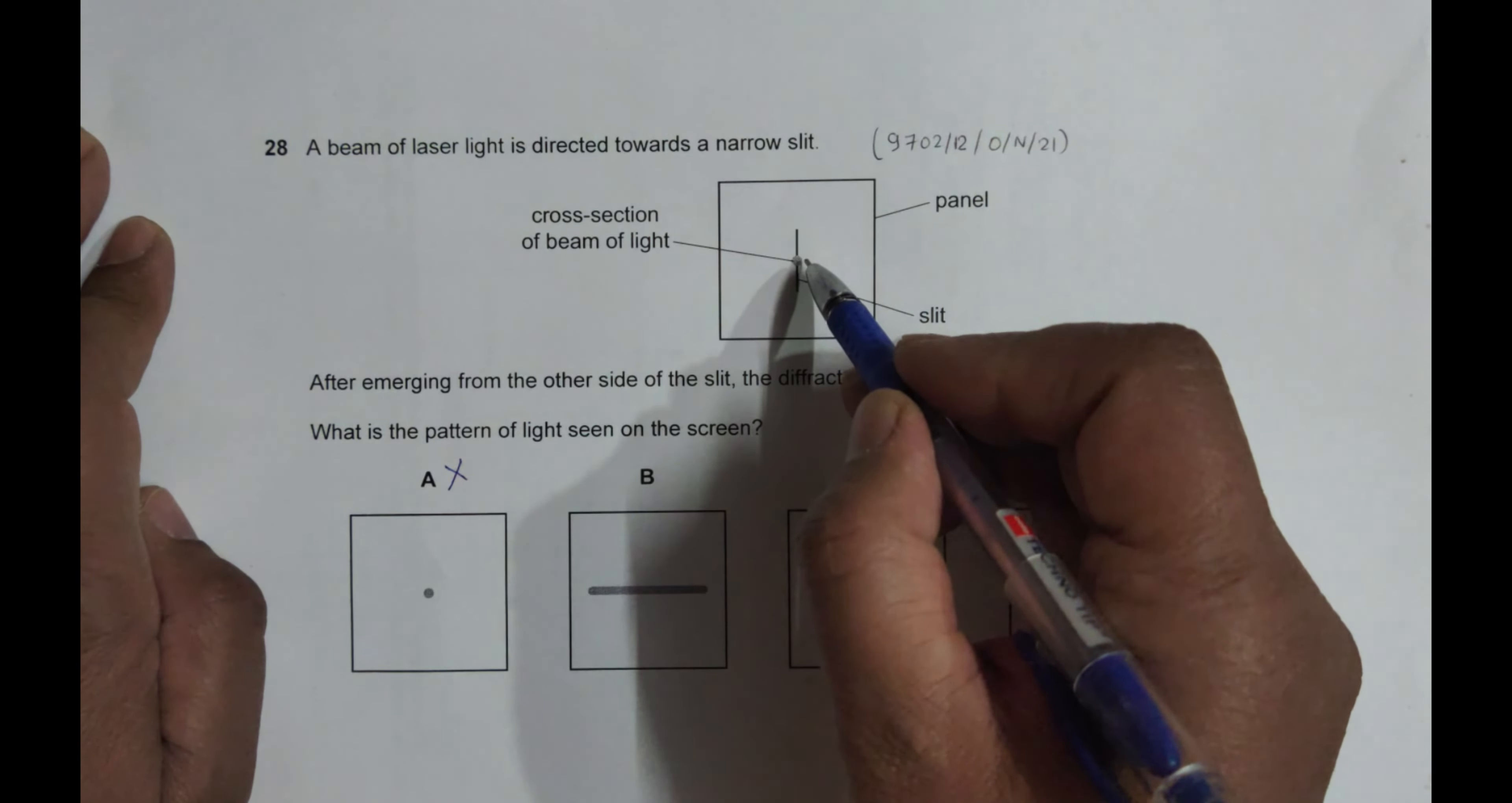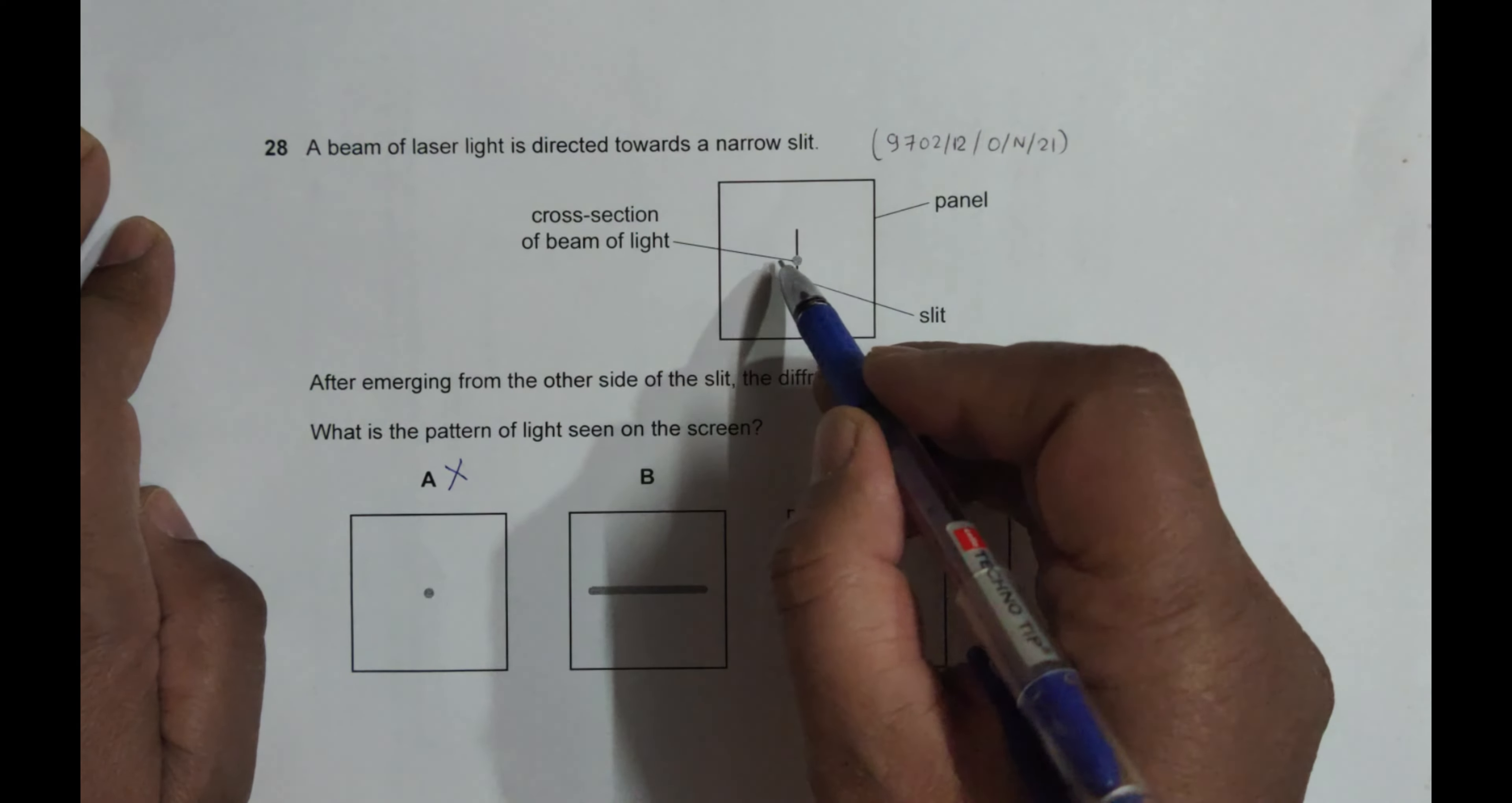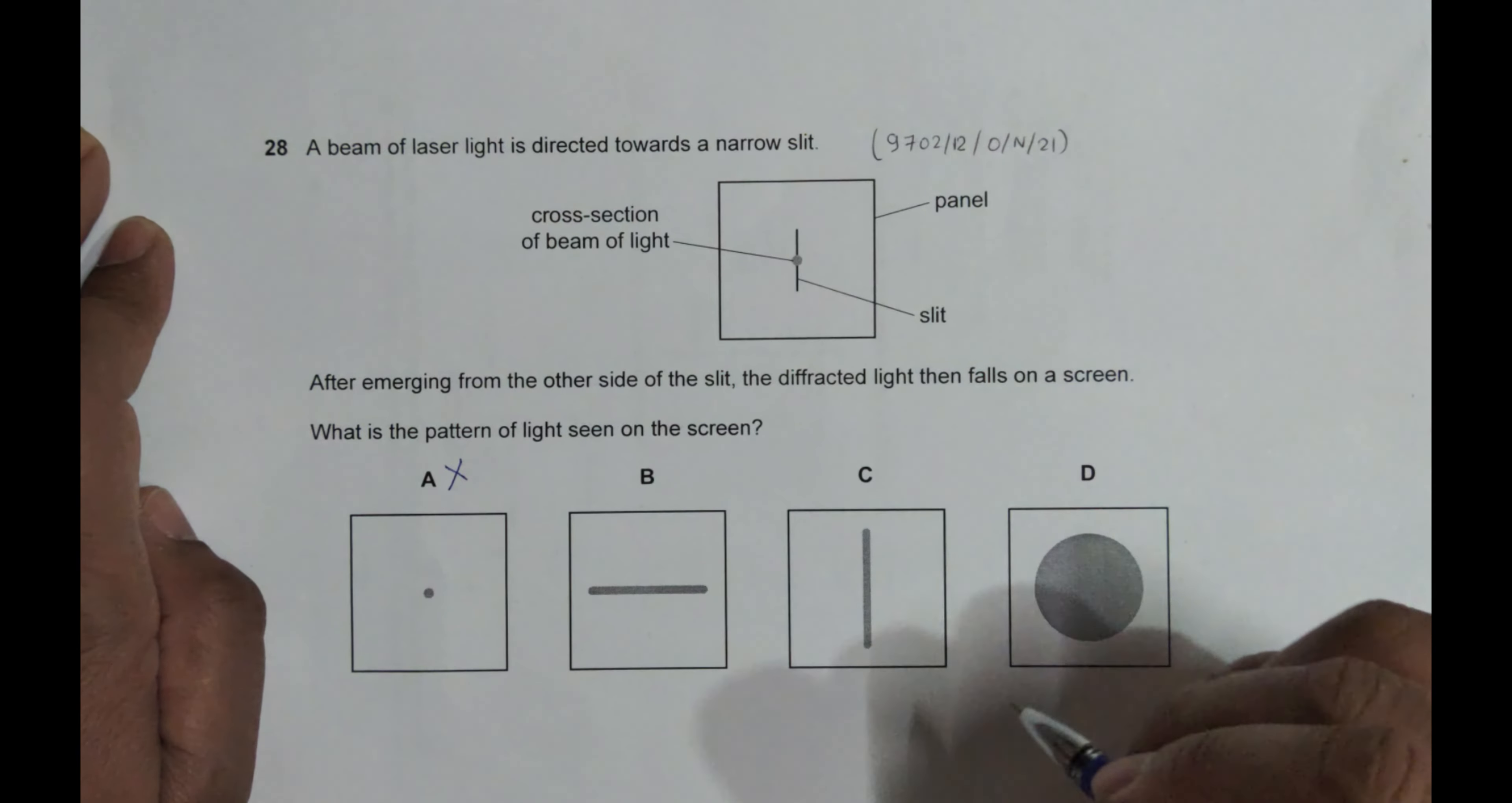The length of this, the diameter of this thing is same here. But this thing has diffracted. So choice B seems to be correct.